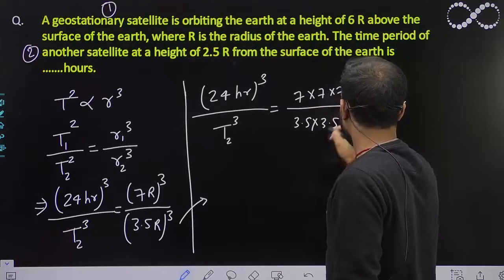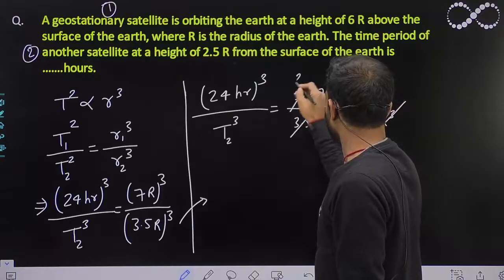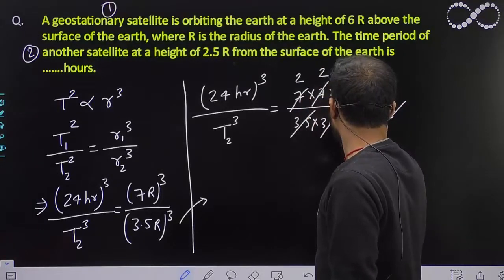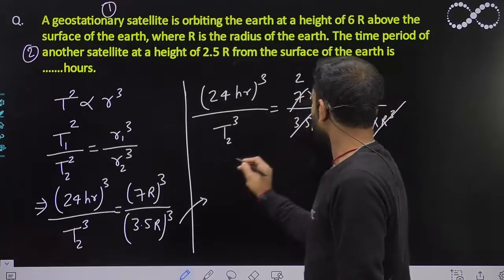This will get cancelled out and this is 7 by 2, that will be 2. This will also become 2 and this will also become 2.